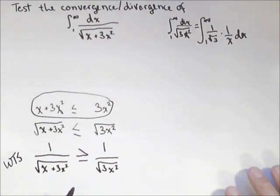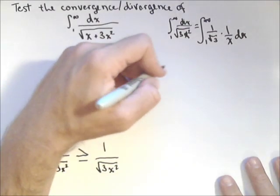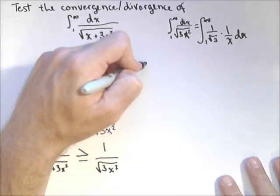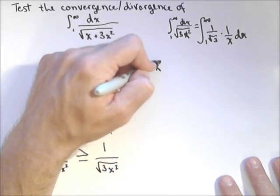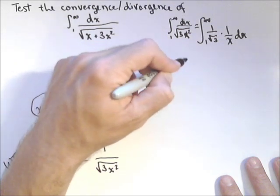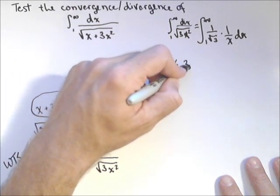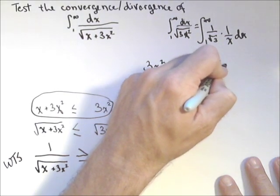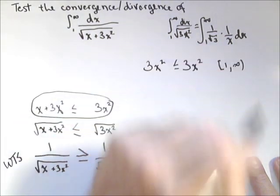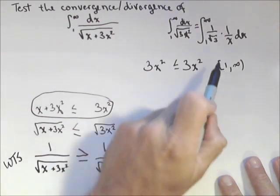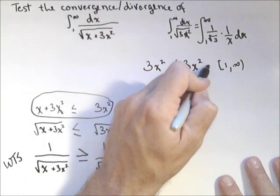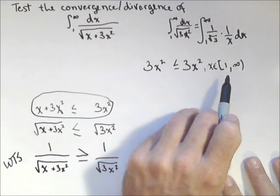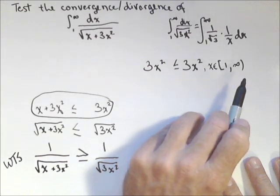This is a neat little trick that'll work. So first statement I'm going to start with: I know that three x squared is less than or equal to three x squared from one to infinity. Okay, that interval is actually important because we know that everything we're putting in for x is one or bigger.